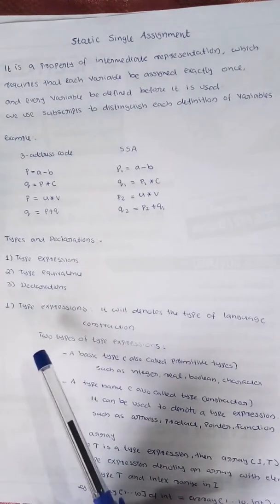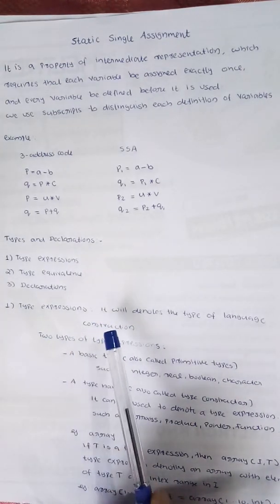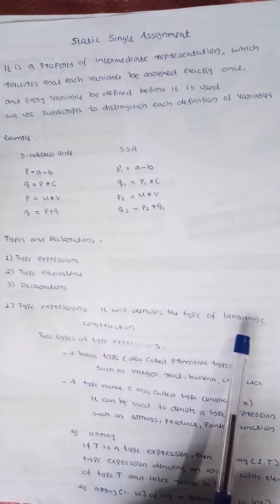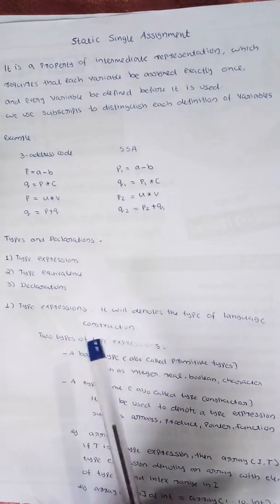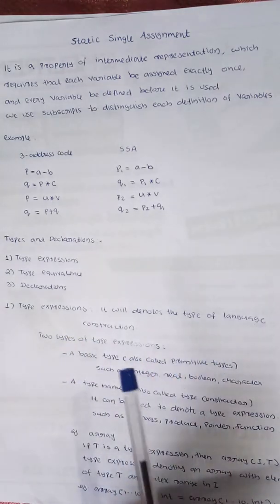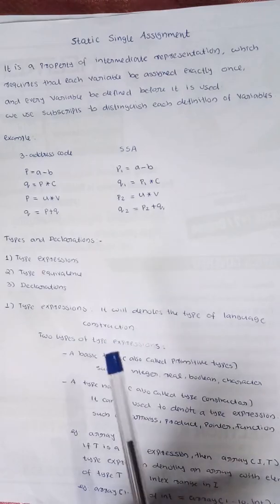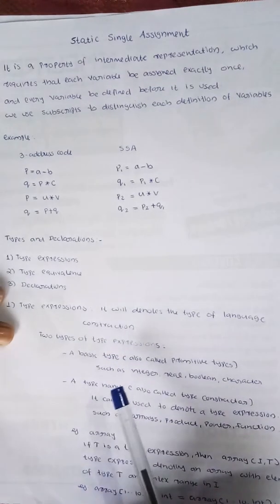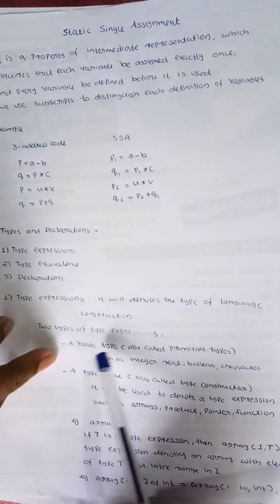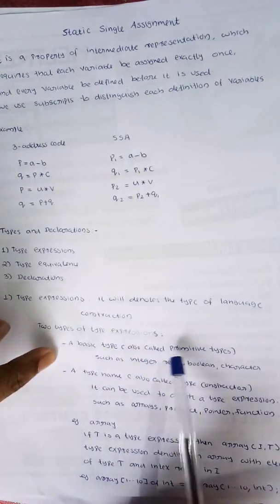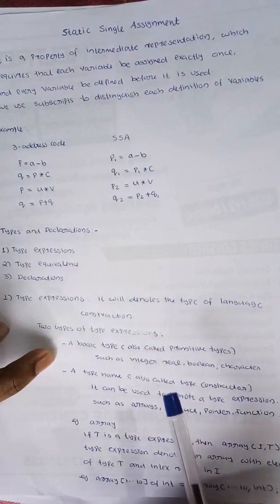Type expressions: a type expression denotes the type of a language construction. There are two different kinds of type expressions. The first one is basic type — primitive types. We will look at Java data types.